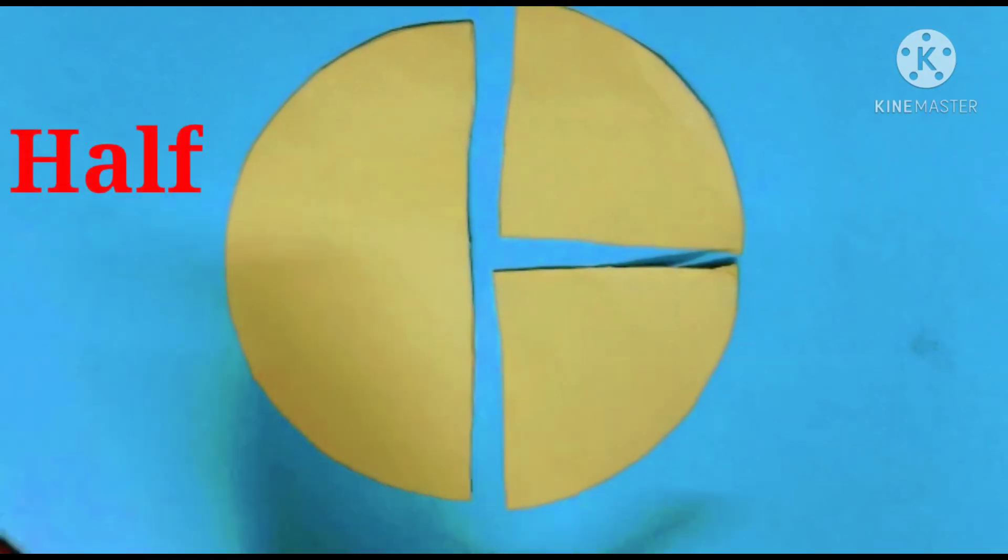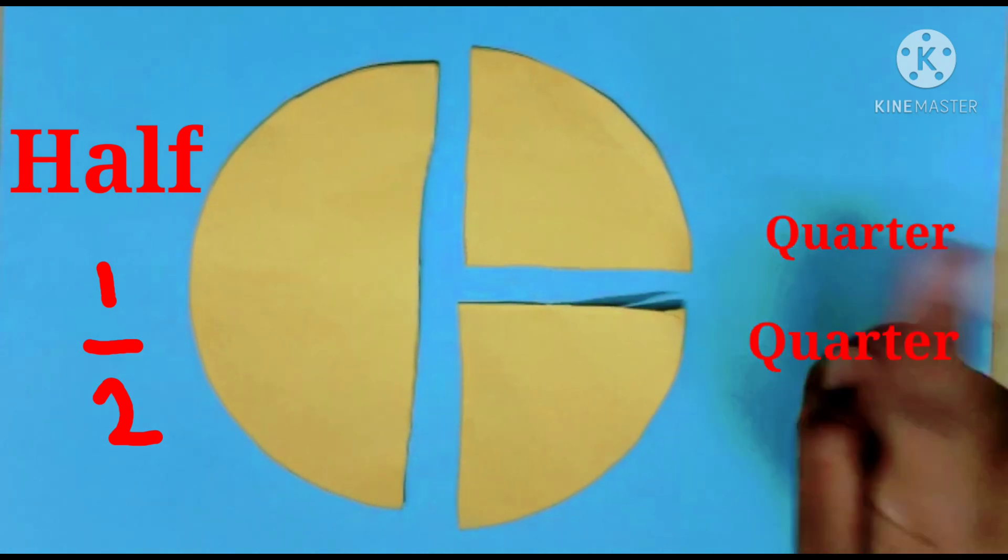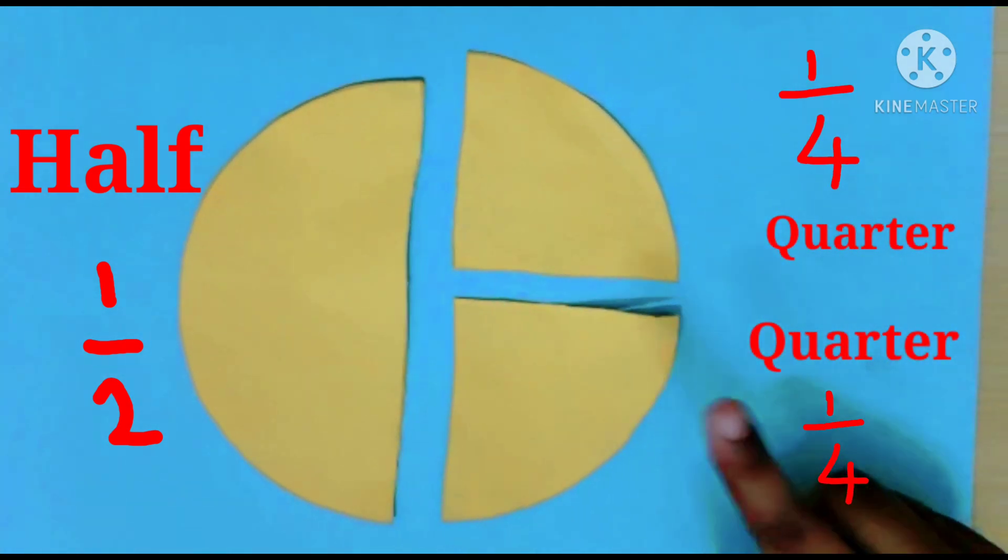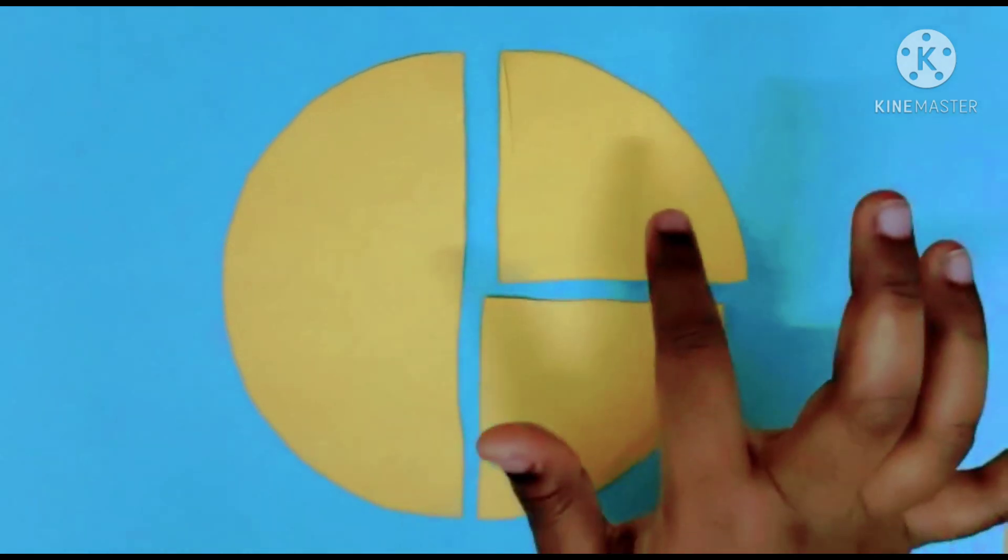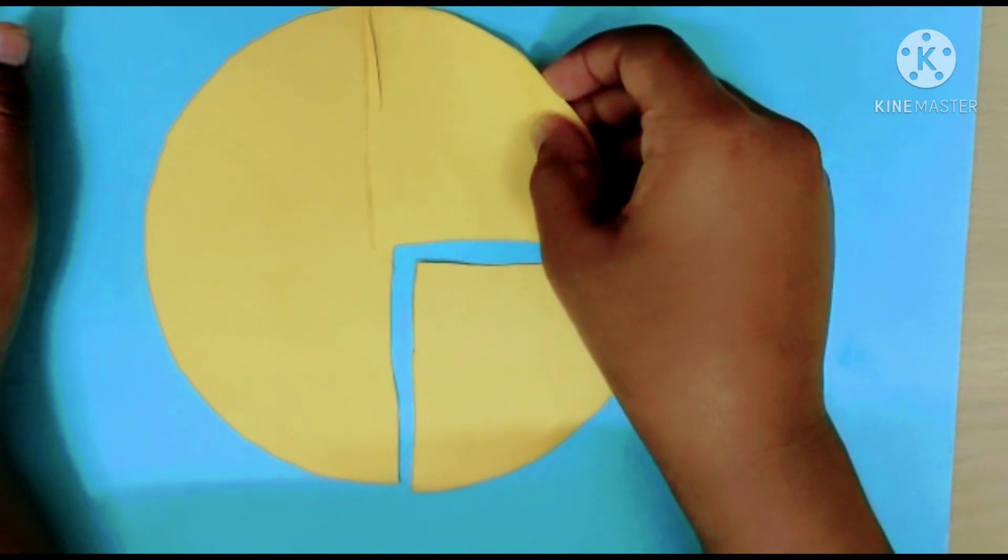This half, that is one by two. This is one by four and this is one by four. Now we are going to stick this half to this quarter like this.